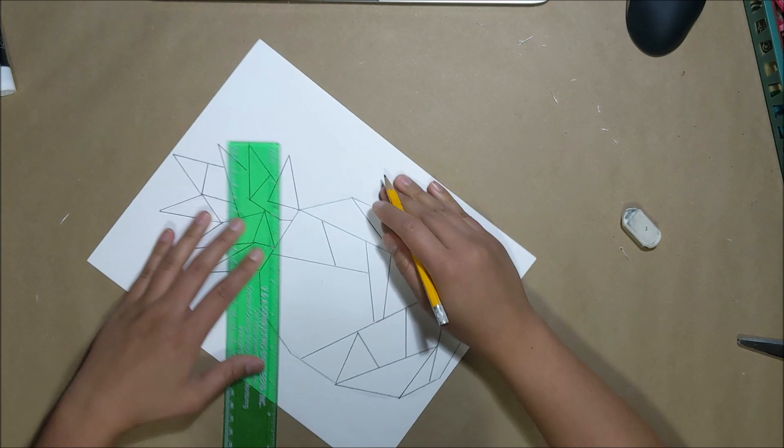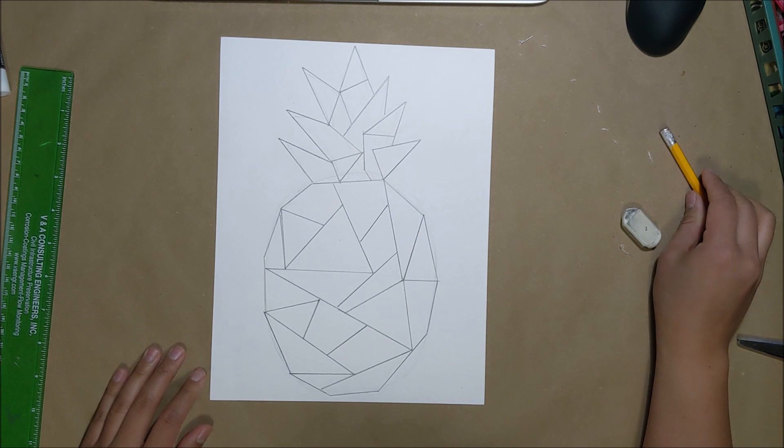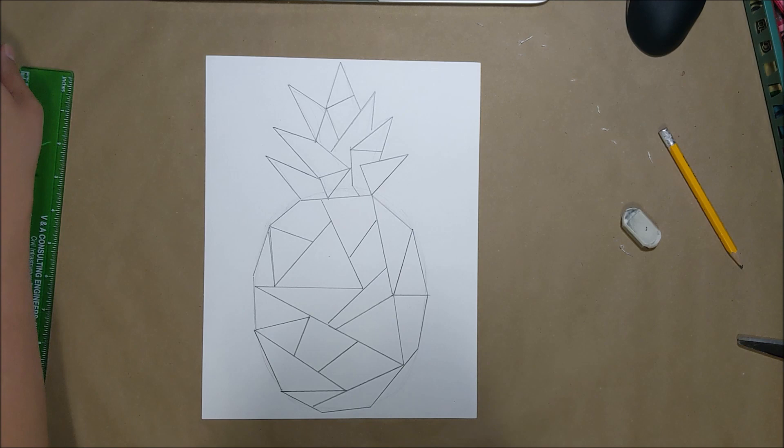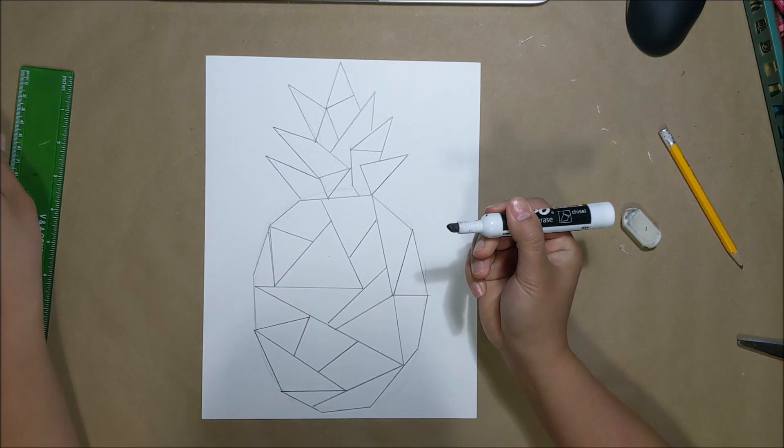Now that we're all done with our lines, we're going to go in with a black marker to outline everything. I'm using an X-bow marker because I like the straight edges of the tip. Also, it is thick enough that it creates nice, dark, bold lines.